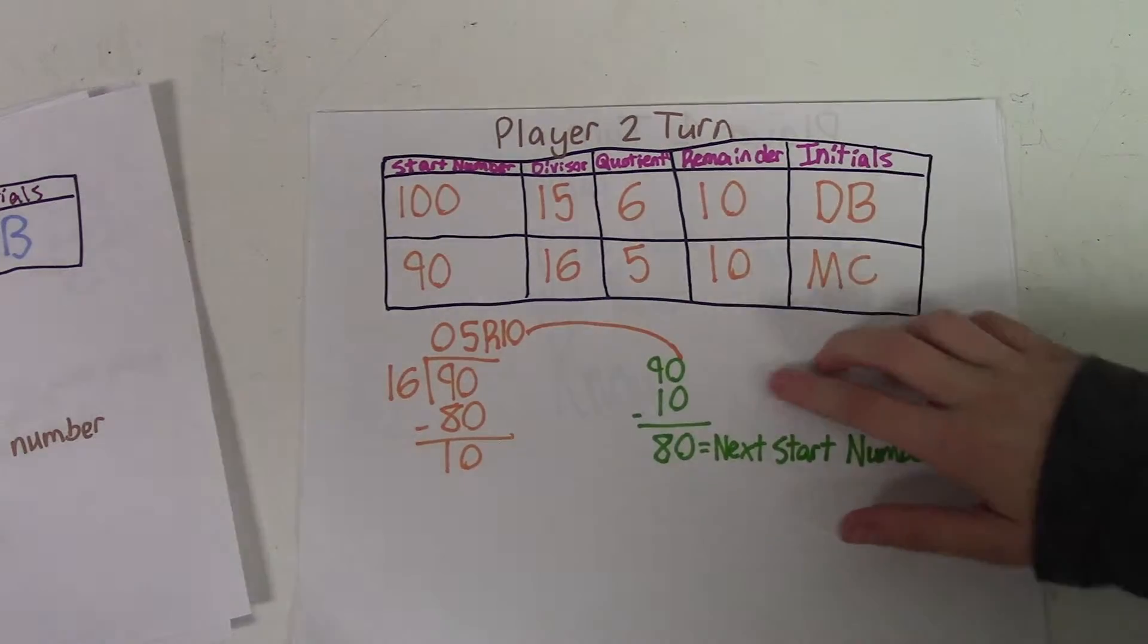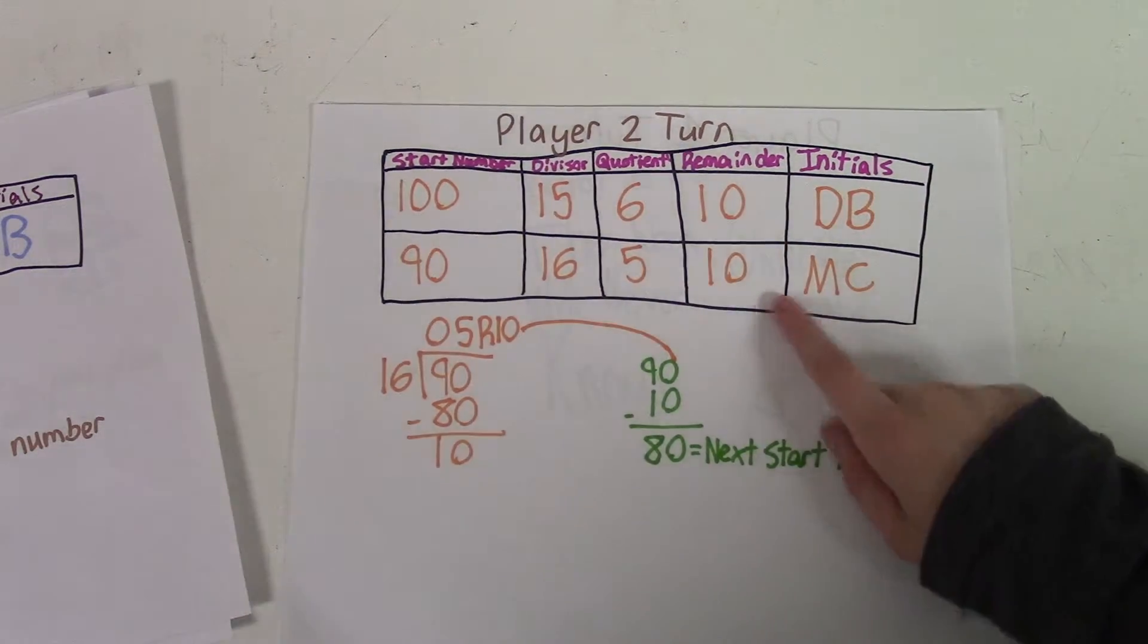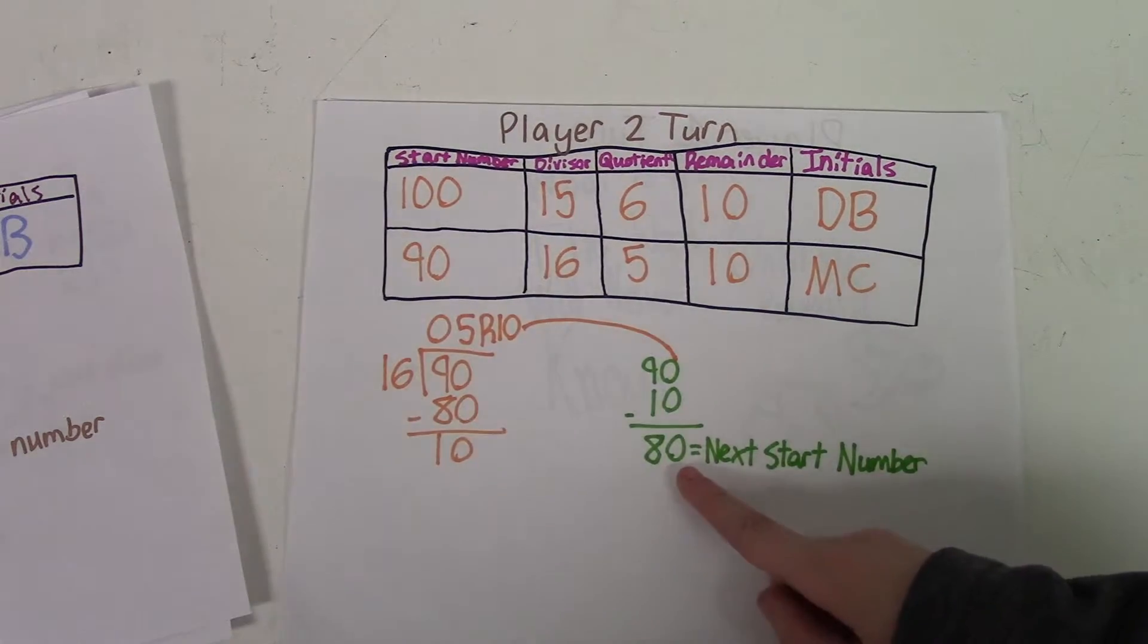I filled out the chart, and now the next step is just to subtract my remainder, which was 10, and the next start number would be 80.